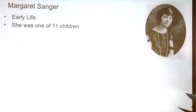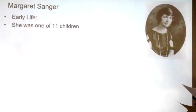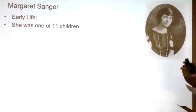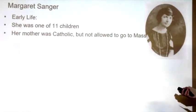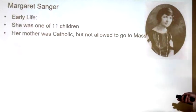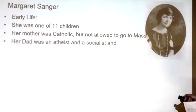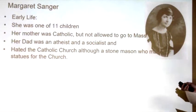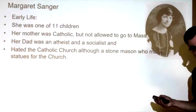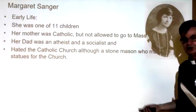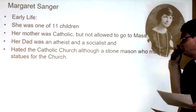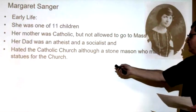Early life. She was one of 11 children. Number seven: who said she failed birth control? That would be Margaret Sanger. She was one of 11 children; her mother was Catholic but not allowed to go to Mass. Her dad was an atheist and a socialist who hated the Catholic Church, although he was a stonemason who made statues for the church — isn't that ironic? His job was making statues for the church while he hated it. Number nine is yes or no. His dad's job: stonemason.